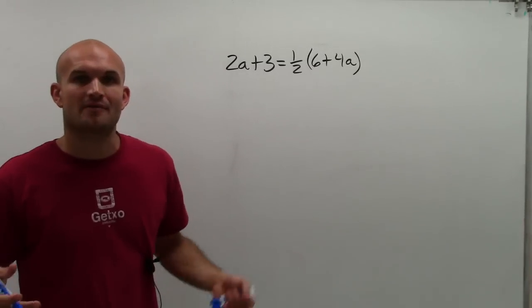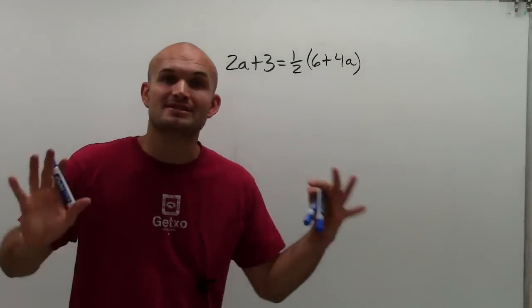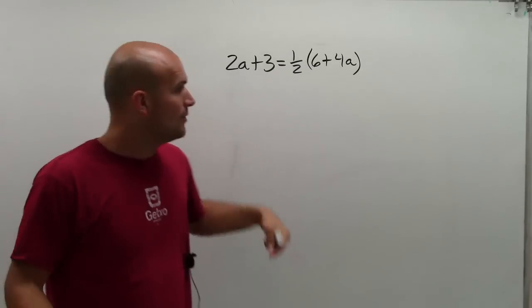So what we notice here is we have a variable on both sides, which a lot of students stop when they freeze and they say, 'ah, crap, now what do I do?'